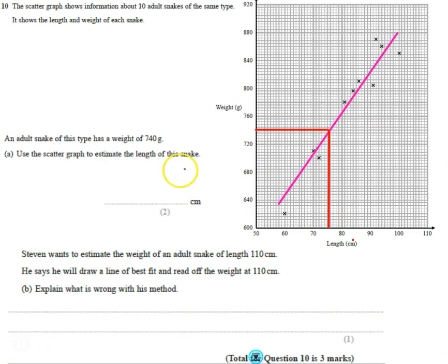What's really important is that the first thing we do is draw a line of best fit. Whenever we're asked to estimate, don't just try to guess. Draw the line of best fit, then bounce off the line. We went across, then down, and estimated approximately 75 centimeters.